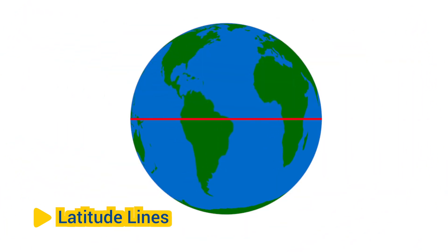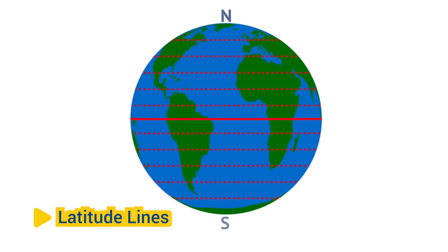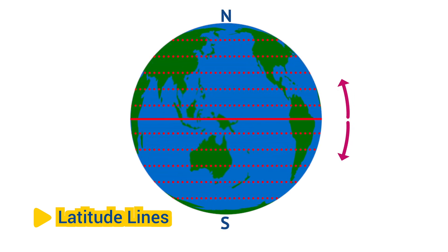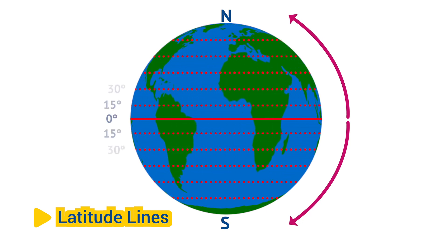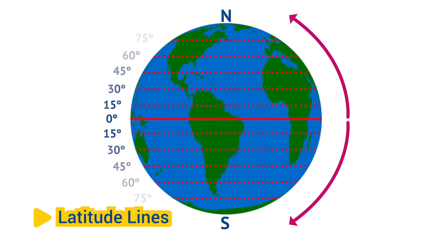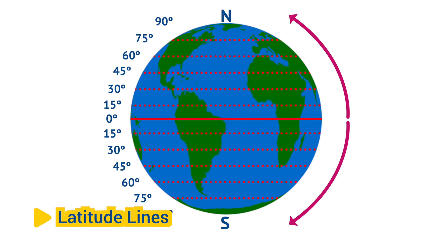Latitude Lines: Latitude lines are imaginary lines that run parallel to the equator, measuring distances north or south of the equator in degrees. They are used to specify locations in terms of north-south position. The equator is at 0 degrees latitude, while the North Pole is at 90 degrees north latitude and the South Pole is at 90 degrees south latitude. Latitude lines are also called parallels.